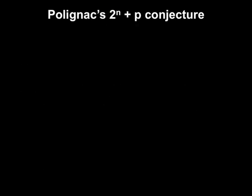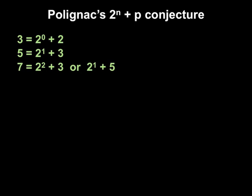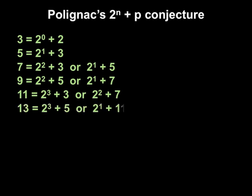Let's go to Polignac's 2n plus p conjecture. That is that every odd number greater than 1 is the sum of a power of 2 and a prime. So for example, 15 is equal to 2 cubed, 8 plus 7. Or 2 squared plus 11, 4 plus 11.